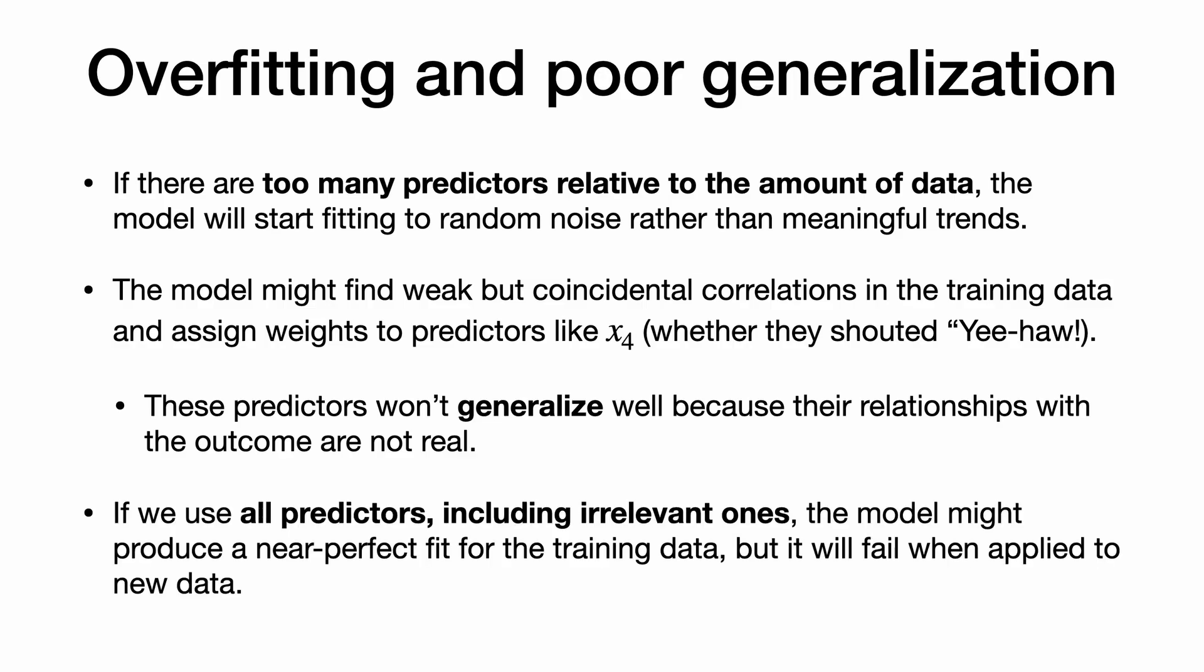If we use all predictors, including irrelevant ones, the model might produce a near-perfect fit for the training data, but it will fail when applied to new data.